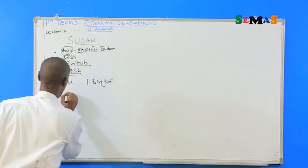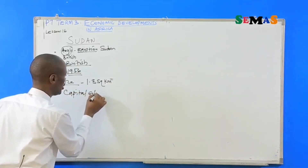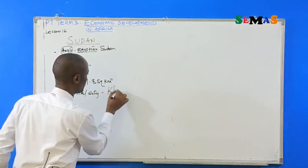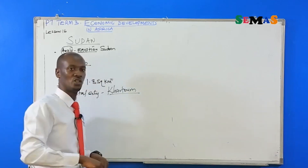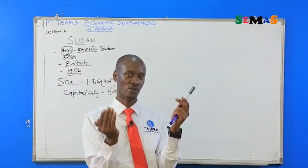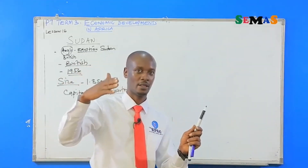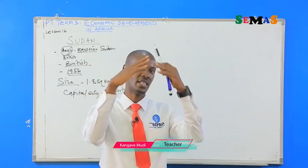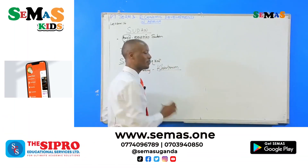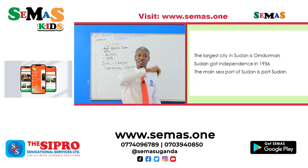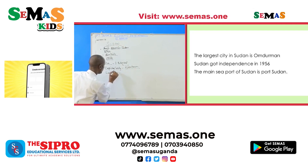The capital city of Sudan is called Khartoum. Khartoum is located at the confluence of the two rivers — the Blue Nile and the White Nile — at the exact point where they meet. However, Khartoum being the capital city does not make it the largest city. The largest city in Sudan is called Omdurman.